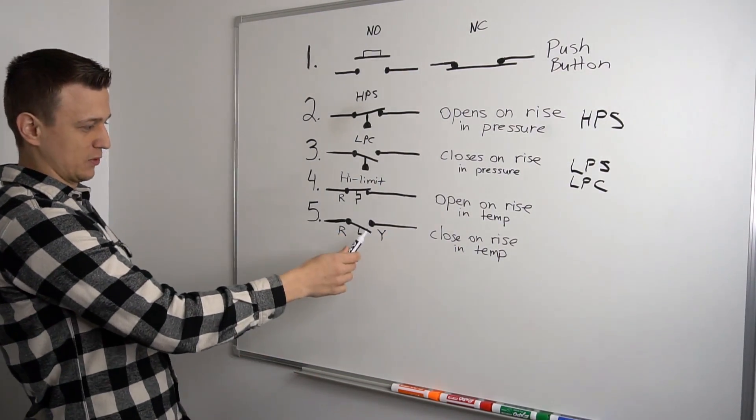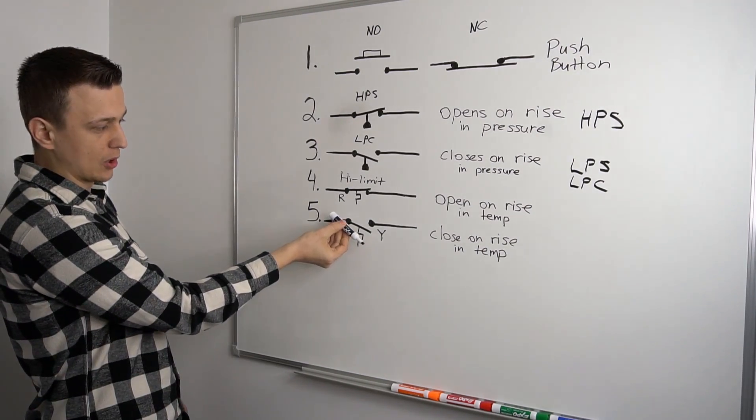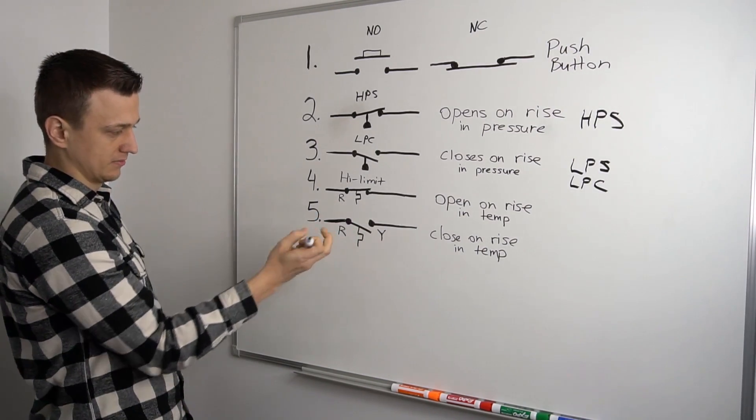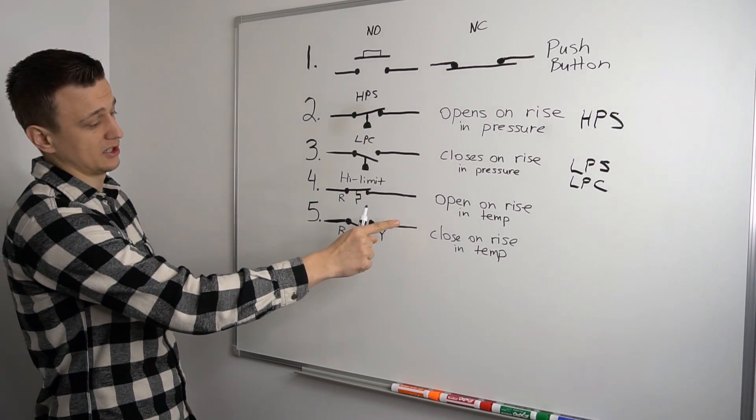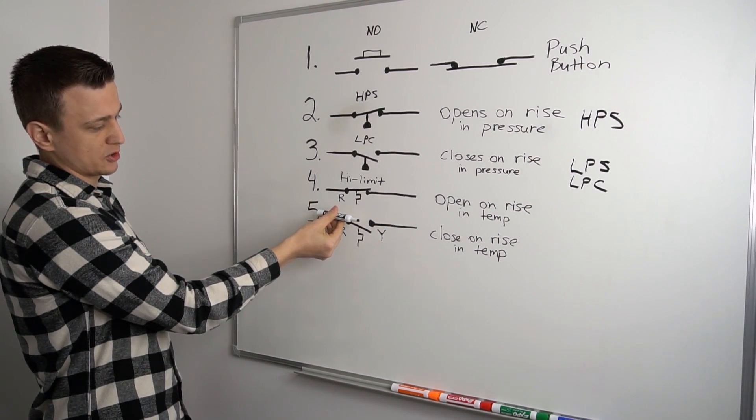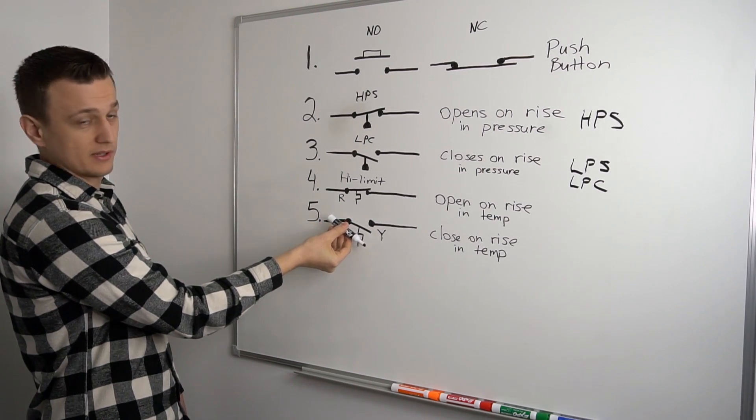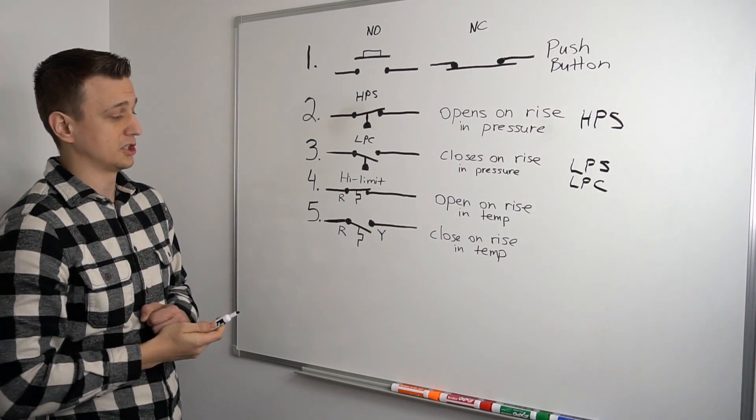So this switch, if it gets hotter in the house, this temperature switch starts to go up until it makes a connection. Boom. It sends power to the air conditioner through Y. And once it cools off enough, the temperature in the house or around the thermostat starts to drop again. So that switch opens back up, interrupts power, and turns the air conditioner off.